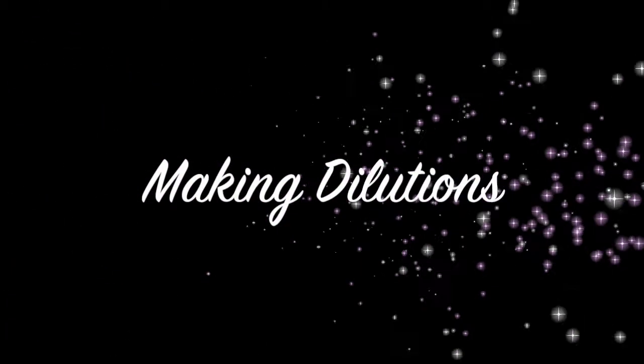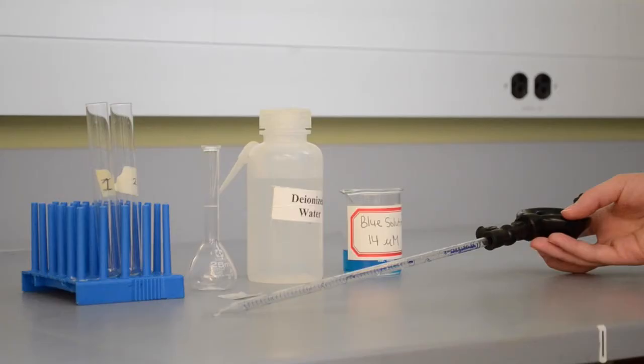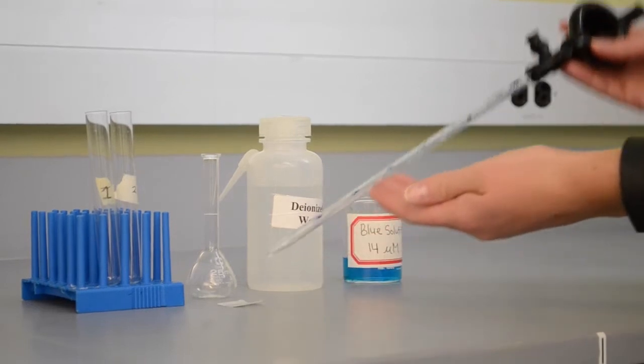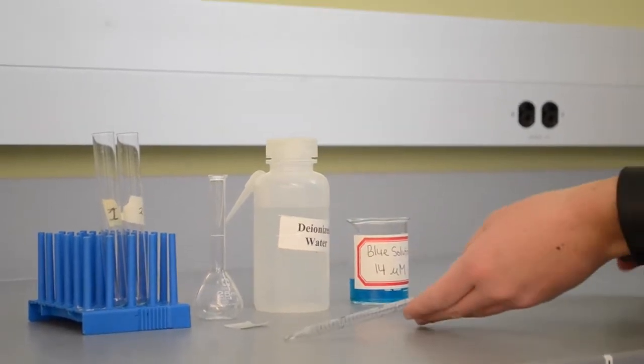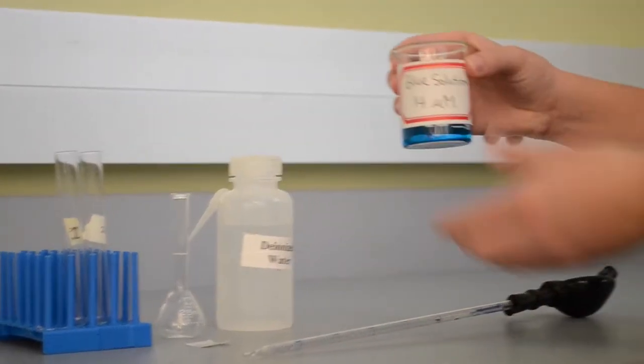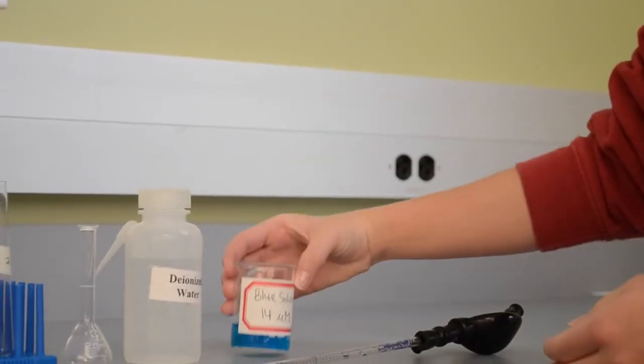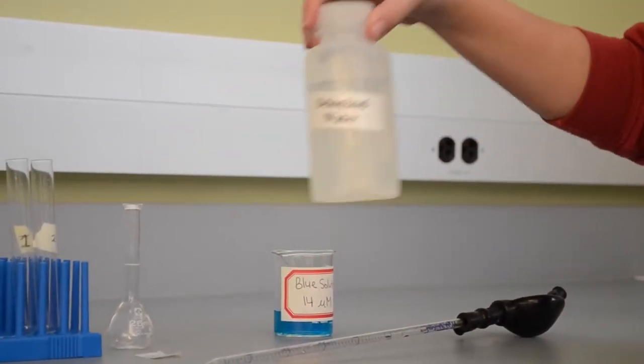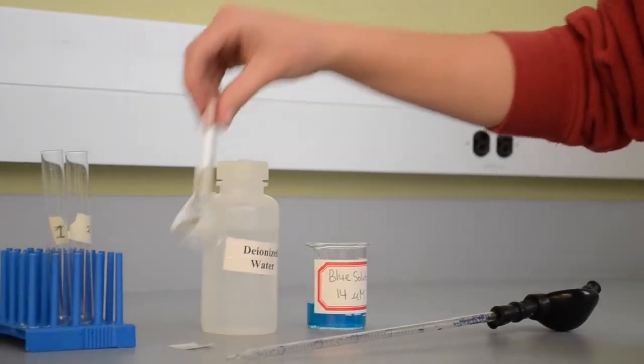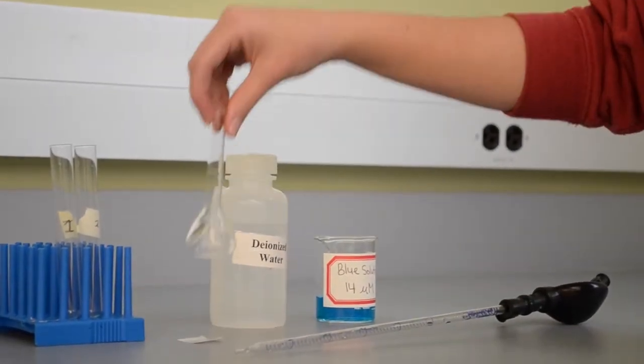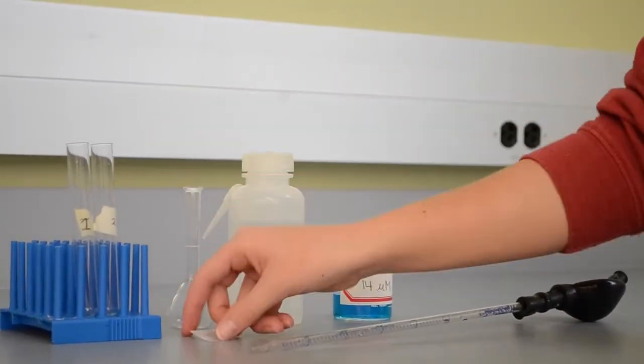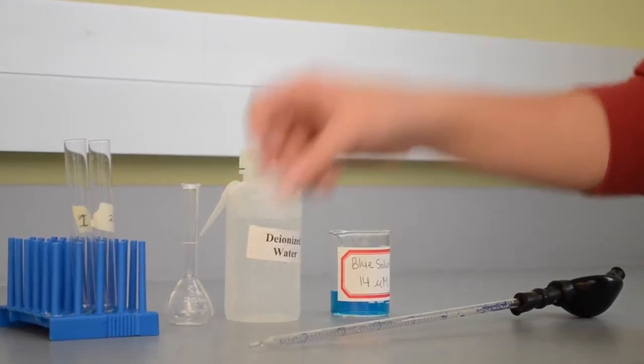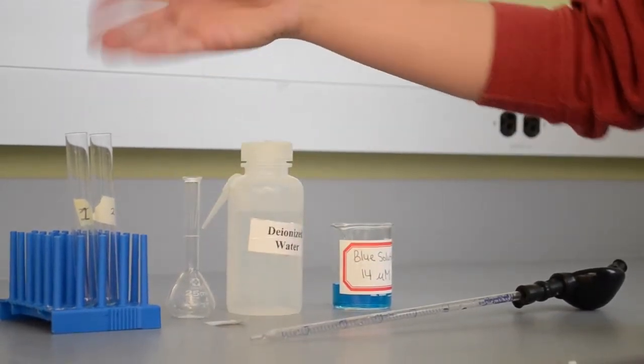Today we will be making dilutions. First you'll need a volumetric pipette, the solution you are wanting to make a dilution of, deionized water, a 25 ml volumetric flask, parafilm, and test tubes to hold your dilutions.